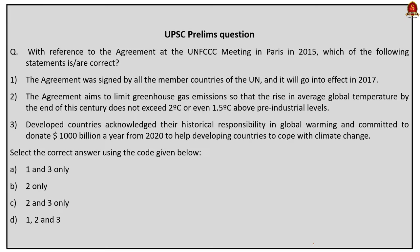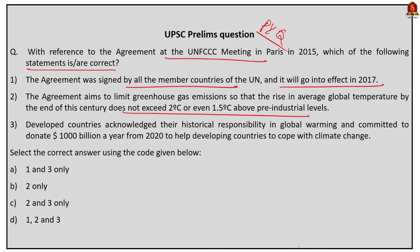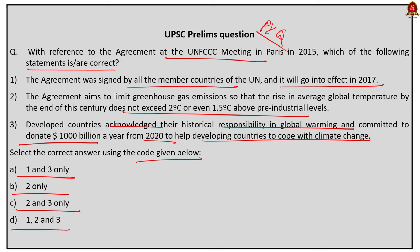With reference to the agreement at the UNFCCC meeting in Paris 2015, the correct statement is option B — two only. Statement two is correct: the agreement aims to limit greenhouse gas emissions so that the rise in average global temperature by the end of the century does not exceed 2°C or even 1.5°C above pre-industrial levels. Statement three is incorrect because developed countries committed to $100 billion — not $1,000 billion — annually.